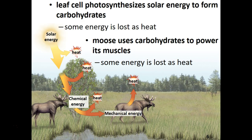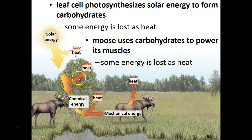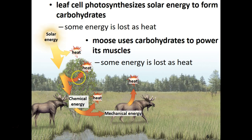Let's look at an example of conversion of energy. Sunlight is the ultimate form of energy. It's taken in by plants, and plants use photosynthesis — one of their metabolic activities — to produce carbohydrates. These carbohydrates can be used to produce energy or to build structures in the plant. But as they convert solar energy to a carbohydrate, they give some energy off as heat.